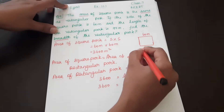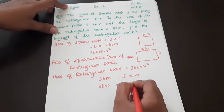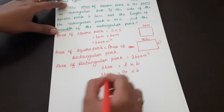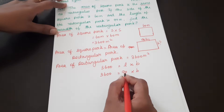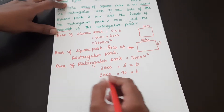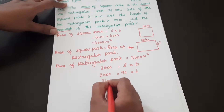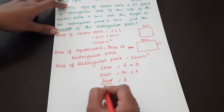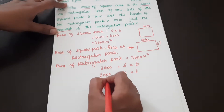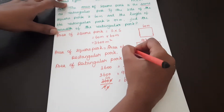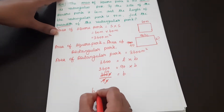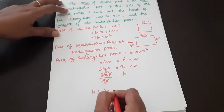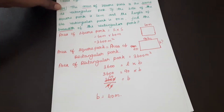So 3600 is equal to L into B, where L equals 90 into B. Moving B to the left hand side: 3600 divided by 90 equals 40. So B is equal to 40 meters.